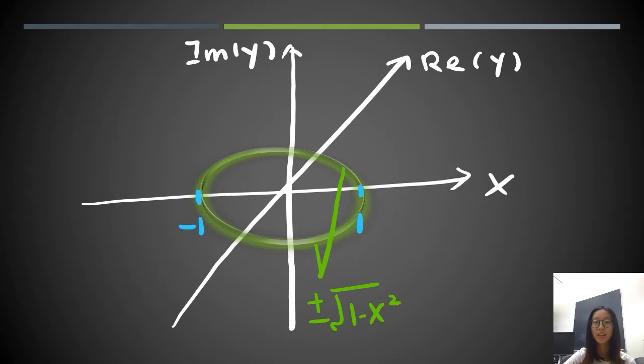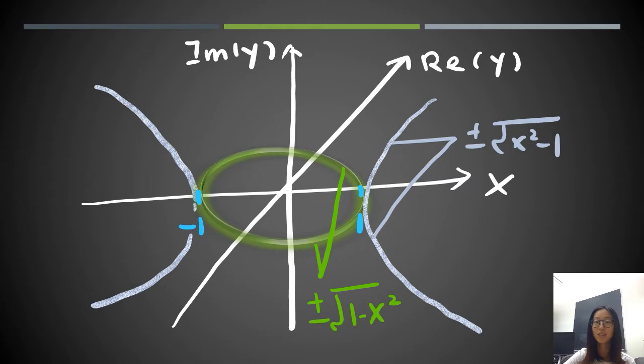When x is smaller than -1 or bigger than 1, y is imaginary. So we draw on the plane of x and the imaginary part of y, which is the plane vertical in our graph. This line corresponds to ±√(x²-1), which is the imaginary part of y. So vertical, horizontal, and vertical. This is the solution of all x and y when x is real and y is complex.